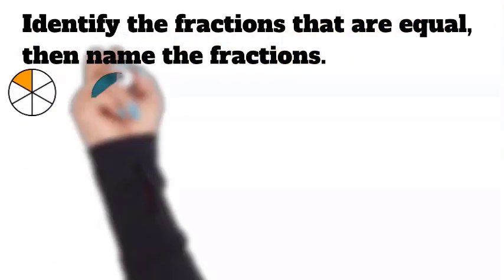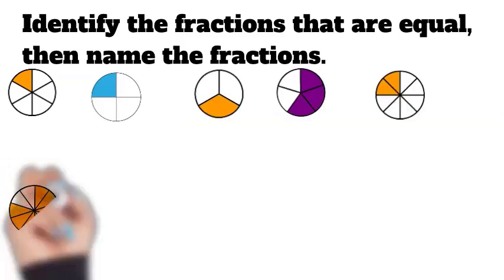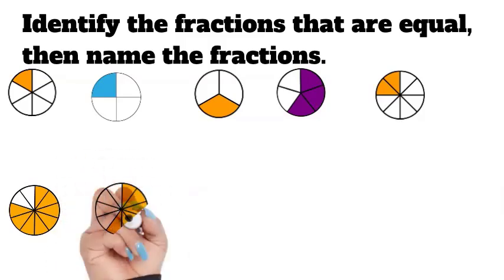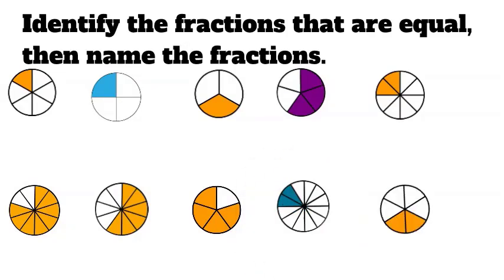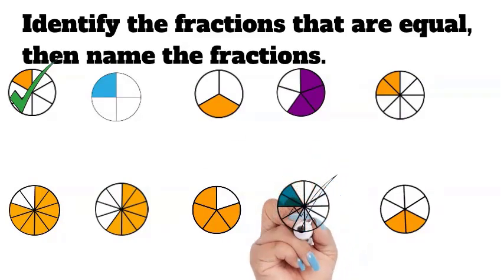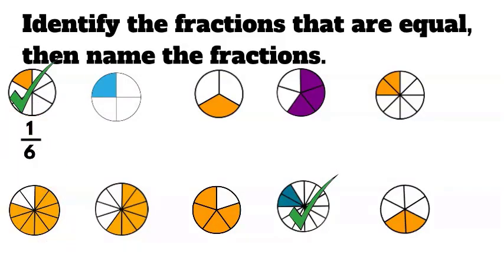Let's go ahead and identify the fractions that are equal, then we're going to name the actual fractions. I'm posting up some fractions for you. As I'm posting them, I want you to look carefully at the size that's shaded, because what we're going to do is compare the sizes shaded to find equivalent fractions. Let's take the very first one — look at how much of the whole is shaded. Now do you see any other that has about the same amount shaded? The fraction for the first one is one sixth, and the fraction for the matching one is two twelfths shaded. So one sixth is equal to two twelfths.